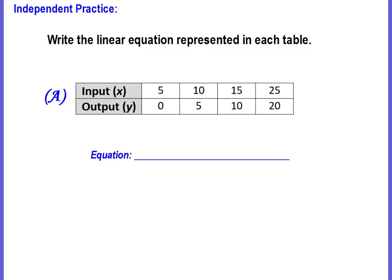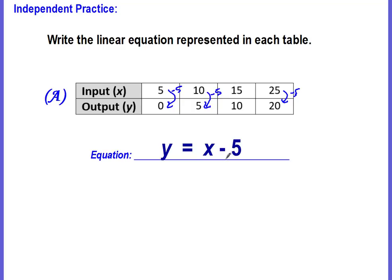You now have three independent practice problems. Pause the video, solve each problem, come back and check your answer. Problem A: write the linear equation represented in each table. Determine if it's additive or multiplicative, write your expression, and turn it into an equation. The correct equation is y equals x minus 5. To go from 5 to 0 you subtract 5; 10 minus 5 is 5, and 25 minus 5 is 20.